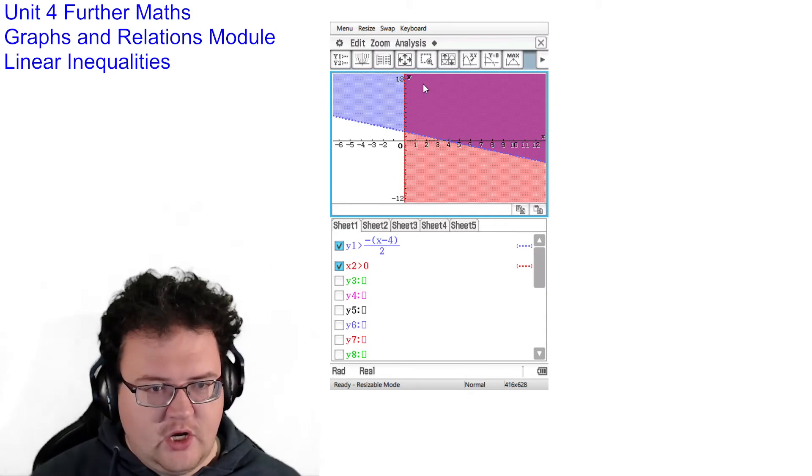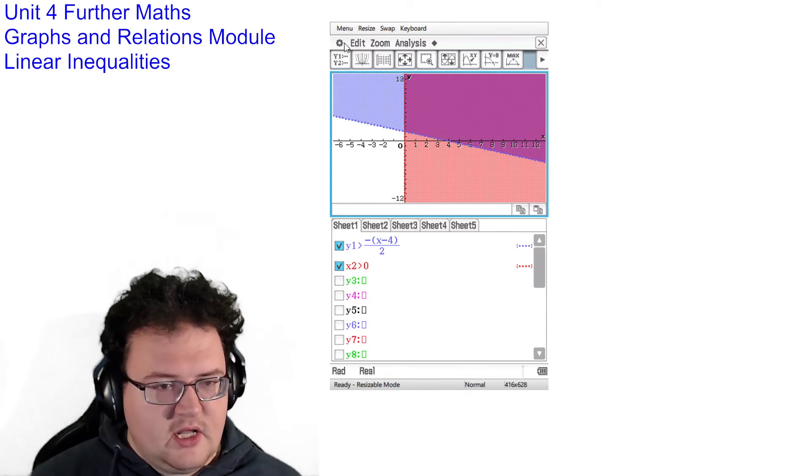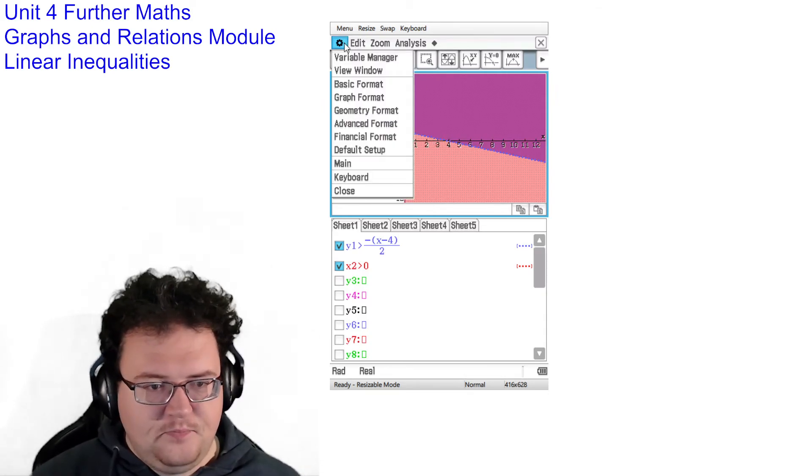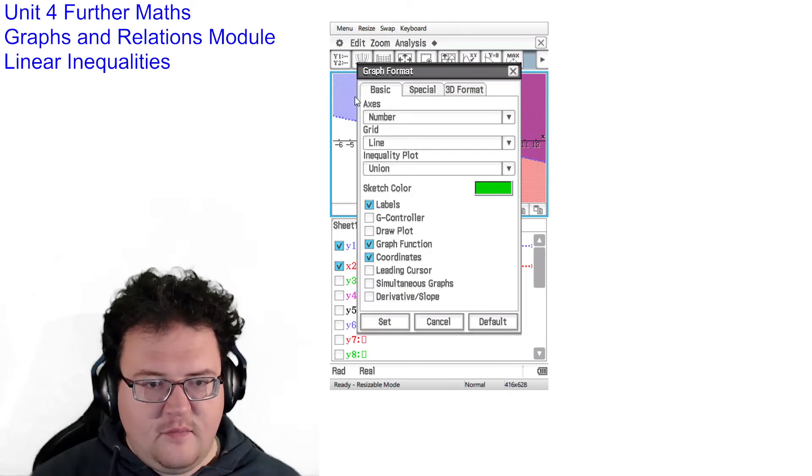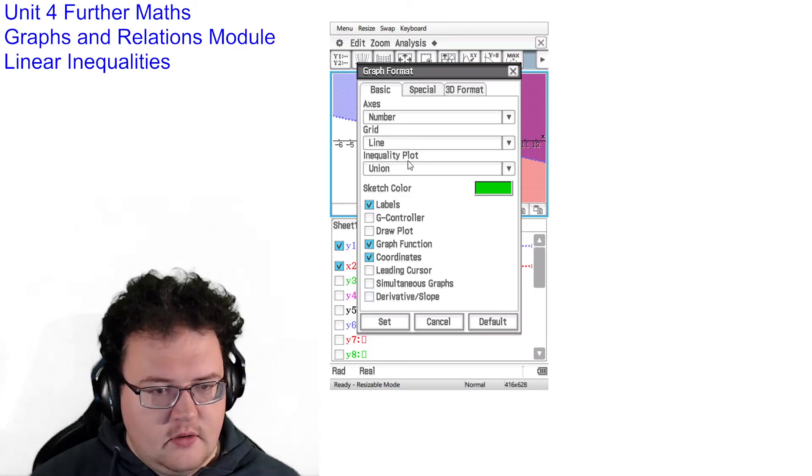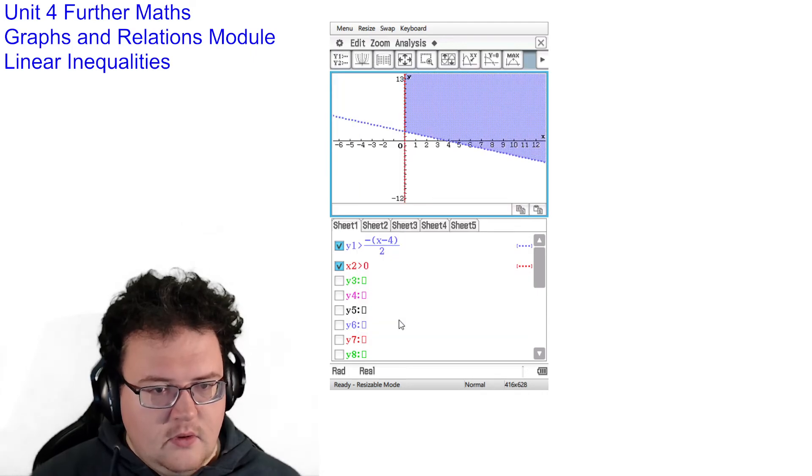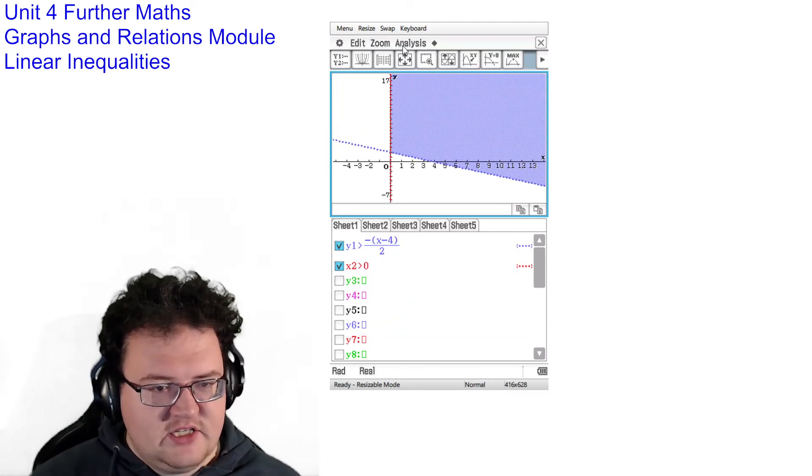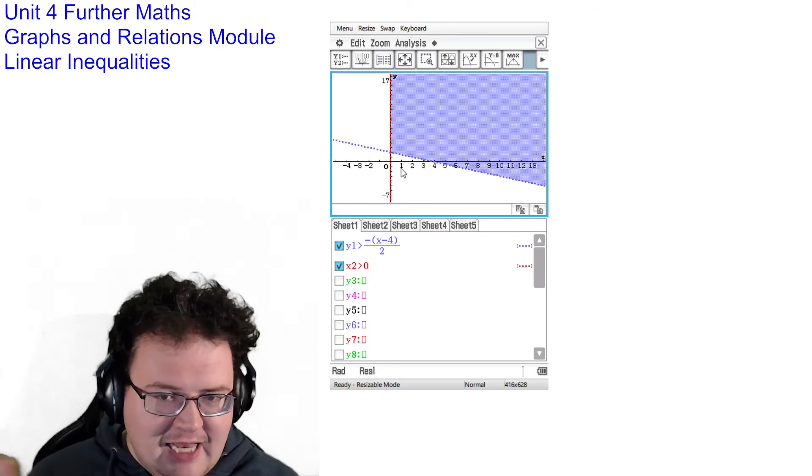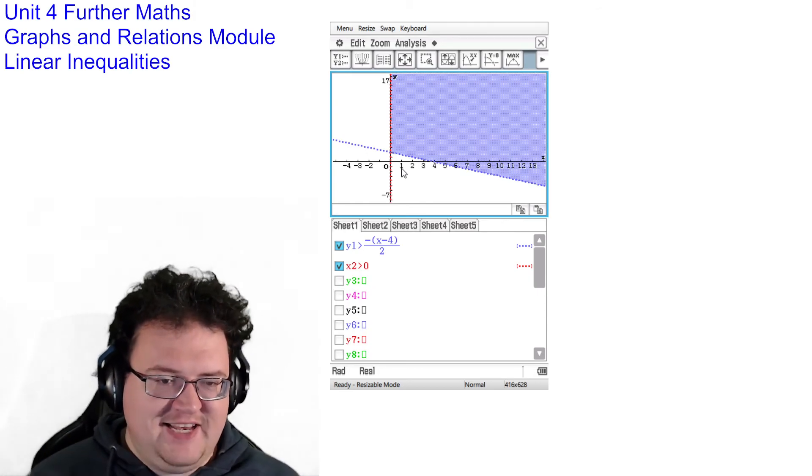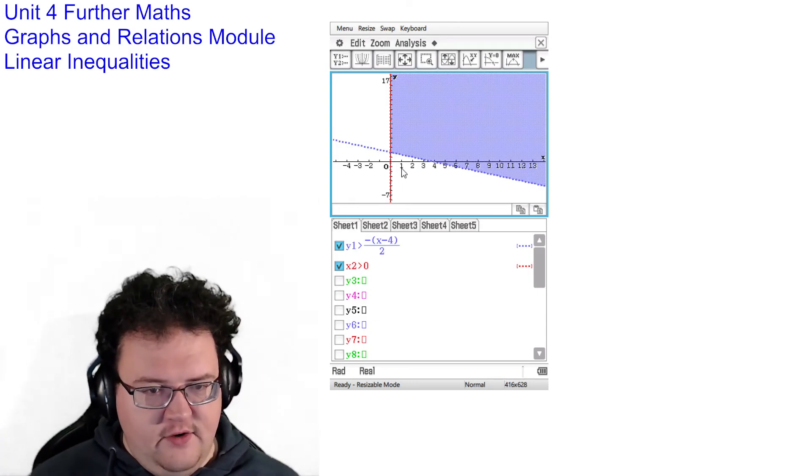This can be a little hard to read sometimes. So luckily what our CAS can do is if we press the cog, we go down to graph format, and it says the inequality plot. We change that to intersection. And all of a sudden now, all it does is it just shows us the area that is relevant. It uncolors anything that doesn't meet all of my linear inequalities.